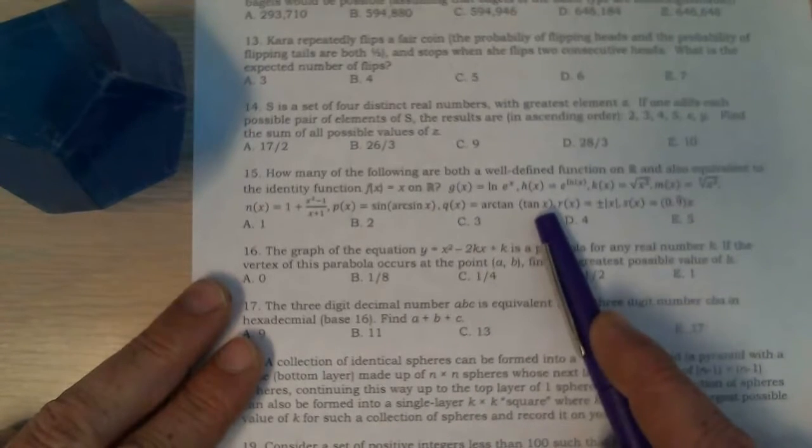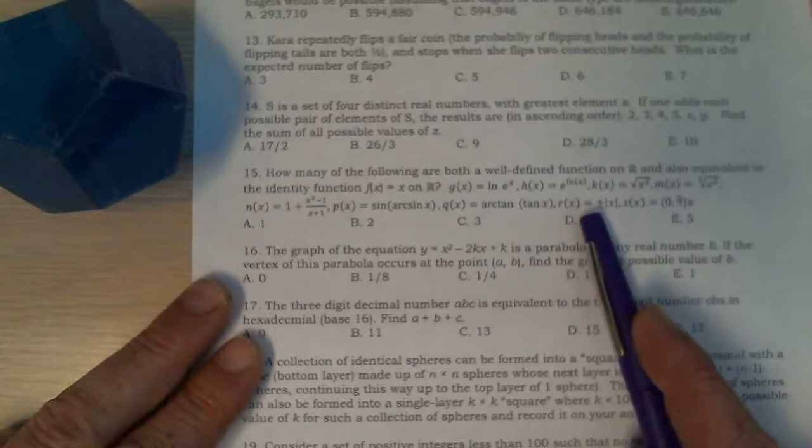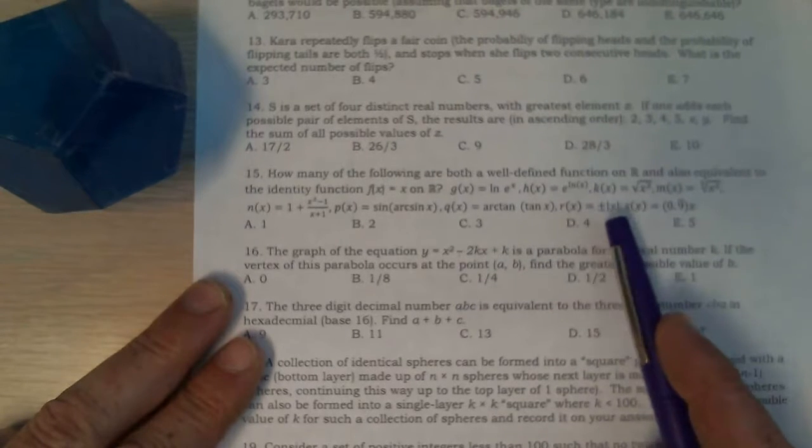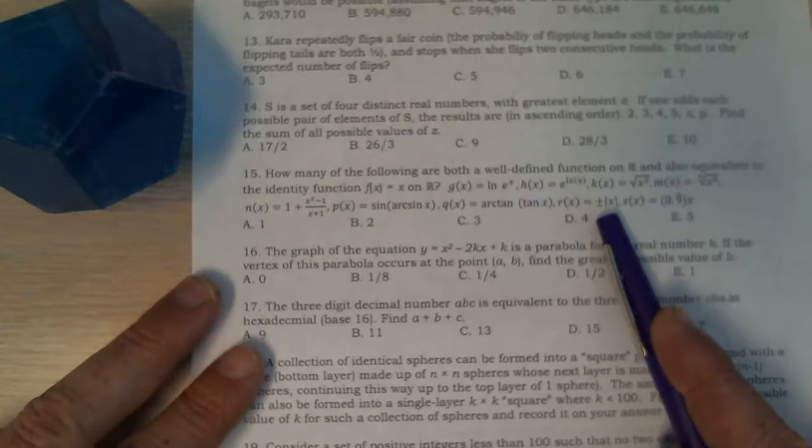Arc tan of the tan x, not defined at pi over 2, plus or minus. It's not even a function. It's got two outputs.